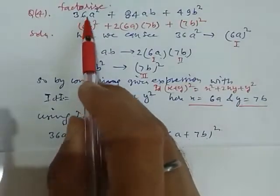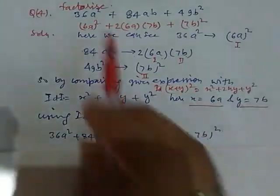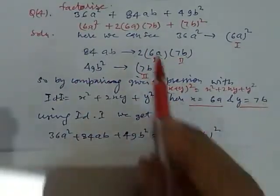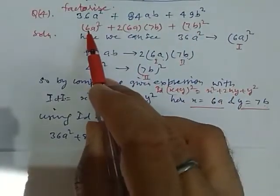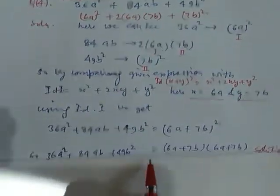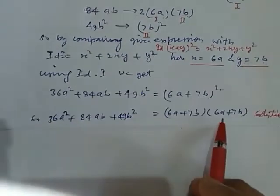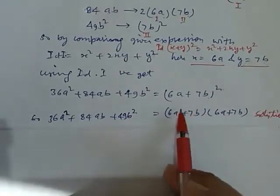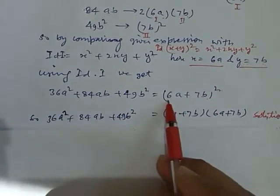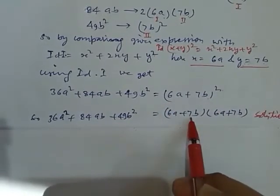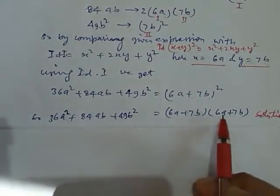First, we convert this as this. So, here x equal to 6a, y equal to 7b. So, this is 6a plus 7b whole square. We can write directly 6a plus 7b whole square. And 6a plus 7b whole square means we write this twice: 6a plus 7b into 6a plus 7b. So, this is our factors.